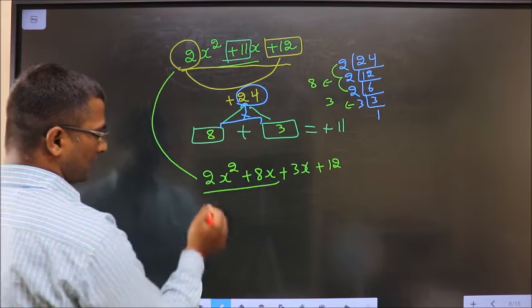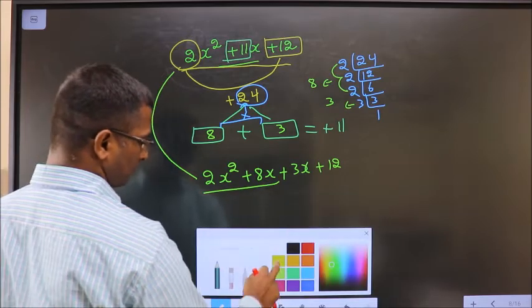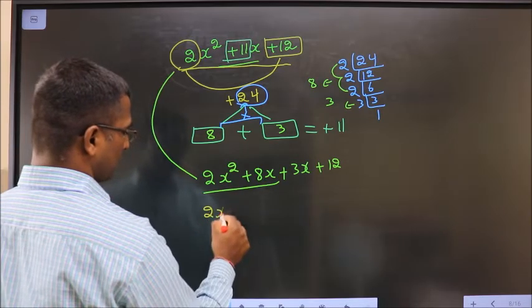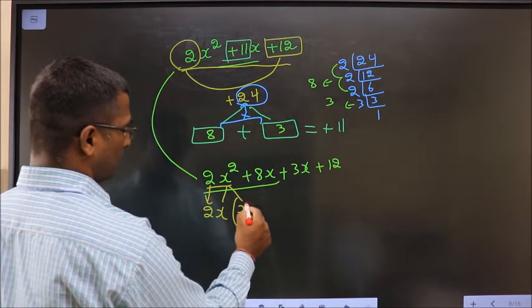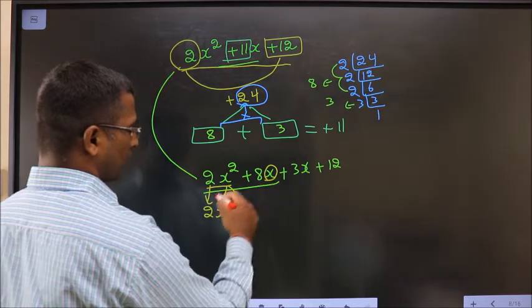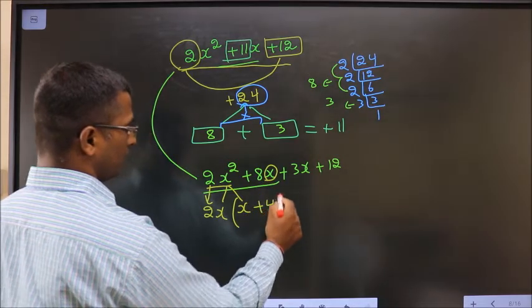Now what can I take common from these? 2x from here. 2 gone out, x square, x gone out, so leaving with one more x. Here x has gone out from 8x, 2 has gone, leaving you with 4.